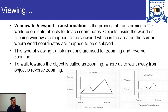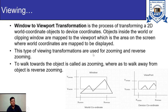Objects inside the world or clipping window are mapped to the viewport, which is the area on the screen where world coordinates are mapped to be displayed. The picture is initially drawn on the world coordinate system; we select some portion within a window, and this portion is displayed as a viewport on the device coordinate. These viewing transformations are also used for zooming — walking towards the object is called zooming, while walking away from the object is reverse zooming.